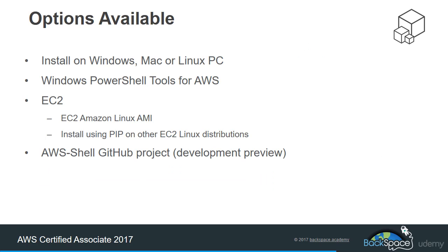The options available for using the command line interface: we can install it on a desktop PC — that could be Windows through the MSI installer, or Mac or Linux, all available for installation on a desktop PC. We also have the Windows PowerShell tools for AWS. If you're already a Windows administrator and comfortable scripting using PowerShell, there's no point throwing away that knowledge — you can still use those skills and use the PowerShell tools for AWS.